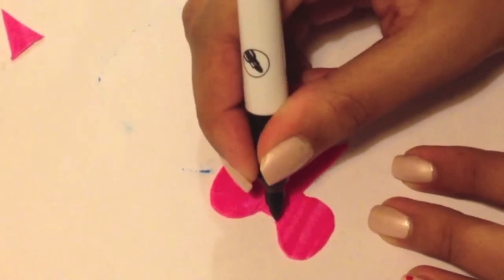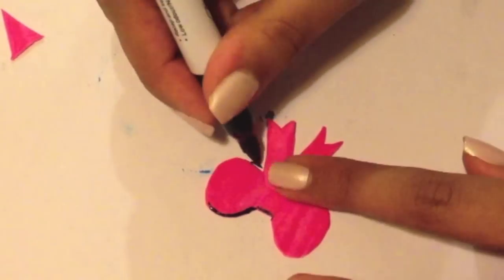With a marker, draw around the edges to outline it and then draw three lines on the middle of the ball.